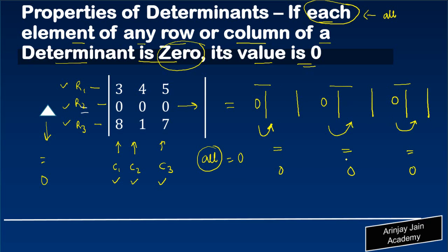Since this is the second row we're looking at, we'll have minus here, plus here, and minus here. For this zero, the value will be 4, 5, 1, and 7. For this zero, when we ignore this row and column, we get 3, 5, 8, and 7. Similarly, for this zero, as you ignore this and this, you get 3, 4, 8, and 1.